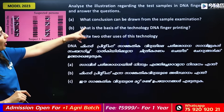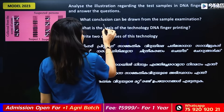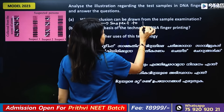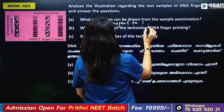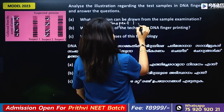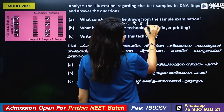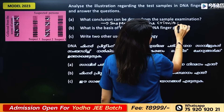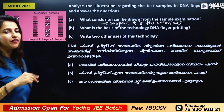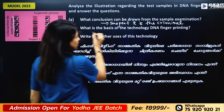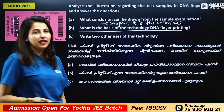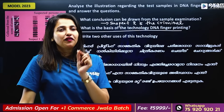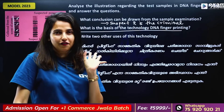What conclusion can be drawn from the sample collected from the crime scene? Suspect 2 is the criminal. What is the basis of the technology of DNA fingerprinting? The basis is that the arrangement of nucleotides in each person is different.